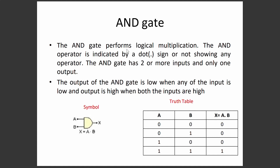The AND gate performs logical multiplication. Its operator is a dot sign, or no operator shown. The AND gate has a minimum of two inputs and only one output. The output X is the logical multiplication of inputs A and B, written as X = A · B.